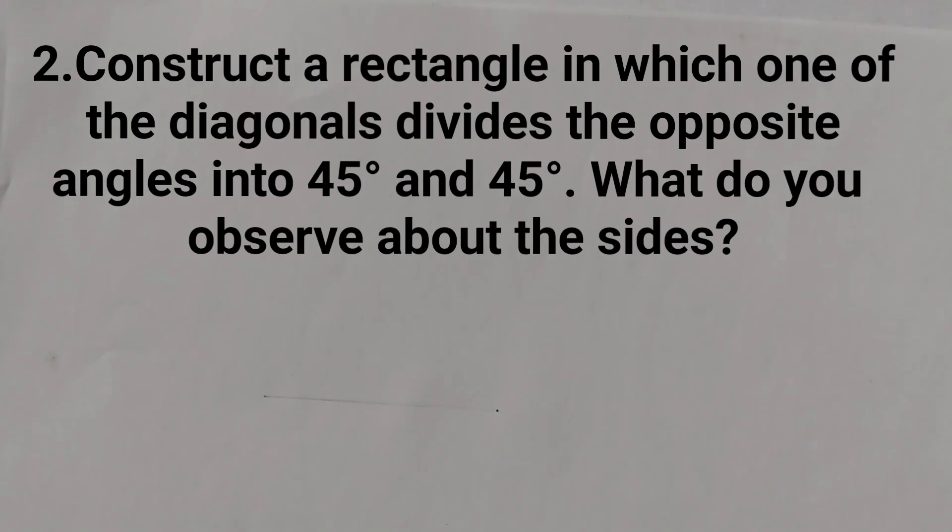Construct a rectangle in which one of the diagonals divides the opposite angles into 45 degrees and 45 degrees. What do you observe about the sides? Previously we have done similar problems with 50 degrees and 40 degrees, also 60 degrees and 30 degrees. Today we will do 45 degrees and 45 degrees.